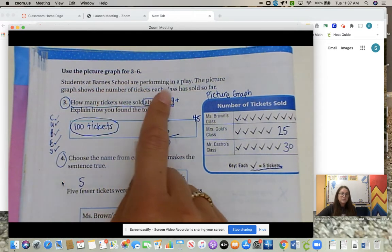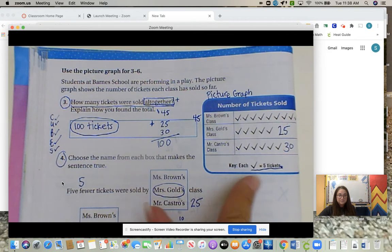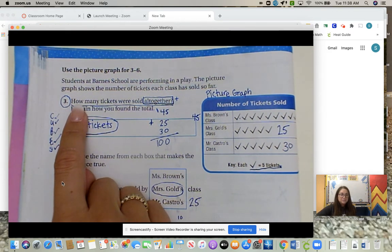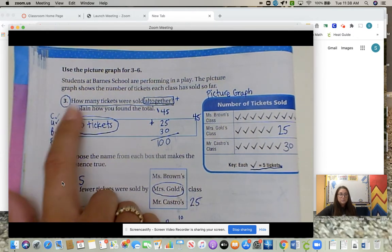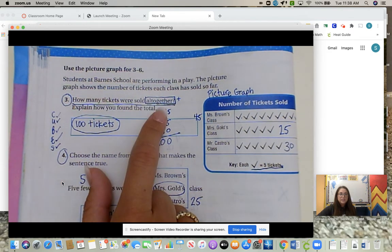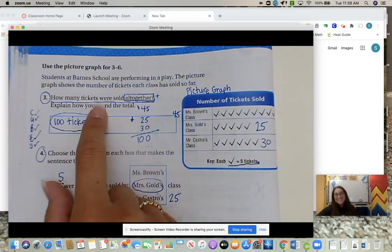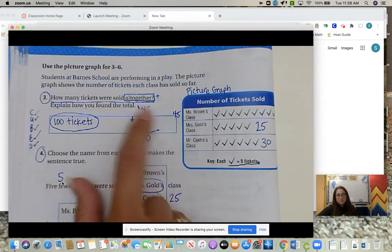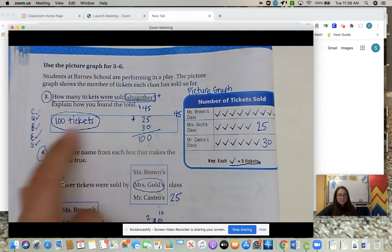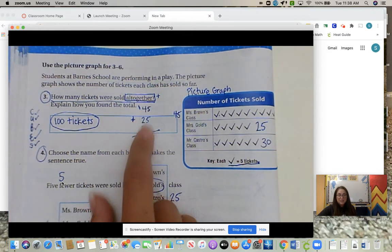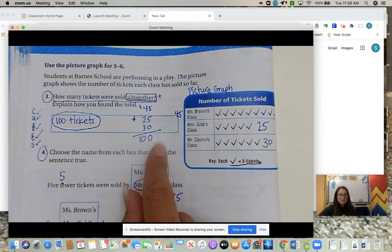Students at Barnes School are performing in a play. The picture graph shows the number of tickets each class has sold so far. Our first question, how many tickets were sold all together? Explain how you found the total. So we want to do CUBES. We underlined our question, check off. Circle our key numbers. If we're figuring out our total, then we write down all the tickets. We have 45, 25, and 30. We box the math verb all together, which is adding. So when we're evaluating, setting up our math problem, we know we're going to add all of them together. And then we solve. So 45 plus 25 plus 30 is 100. So 100 tickets.